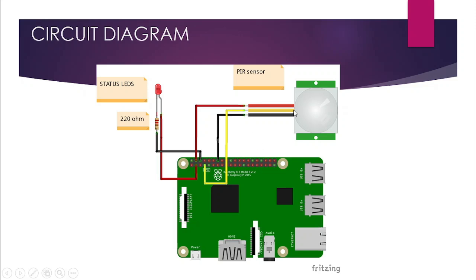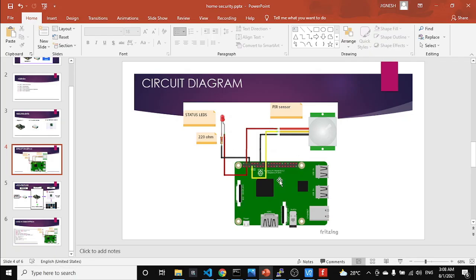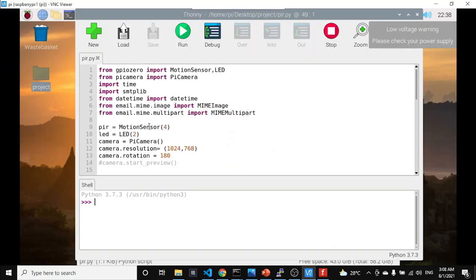In this circuit diagram, the PIR sensor is connected to the Raspberry Pi — the data pin is connected to GPIO4, and VCC and ground are connected to 5V and ground respectively. The status LED is connected to GPIO pin 2 through a 220 ohm resistor to ground. If you change the pin numbers in the circuit diagram, you also need to change them in the code — the LED is defined for GPIO pin 2 and the PIR motion sensor is defined for GPIO pin 4.